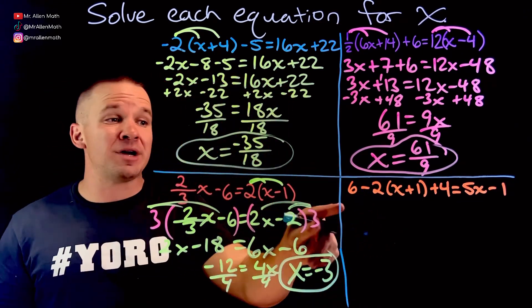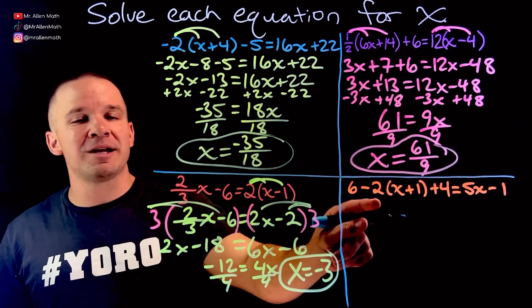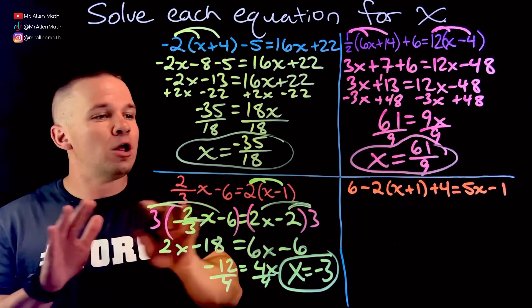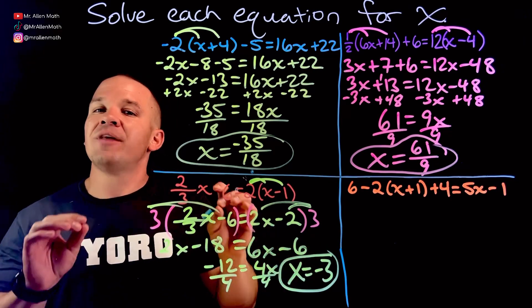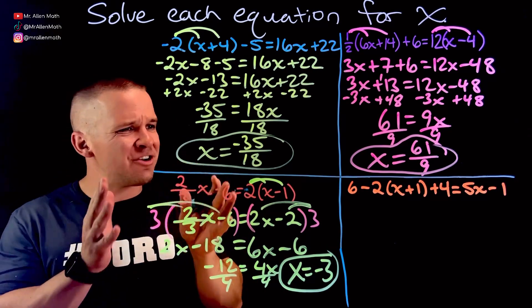We're going to distribute first. So I got to distribute this negative two. Now some people are tempted to do six minus two is four and distribute that. Uh-uh. No bueno. Not okay. That's against PEMDAS.